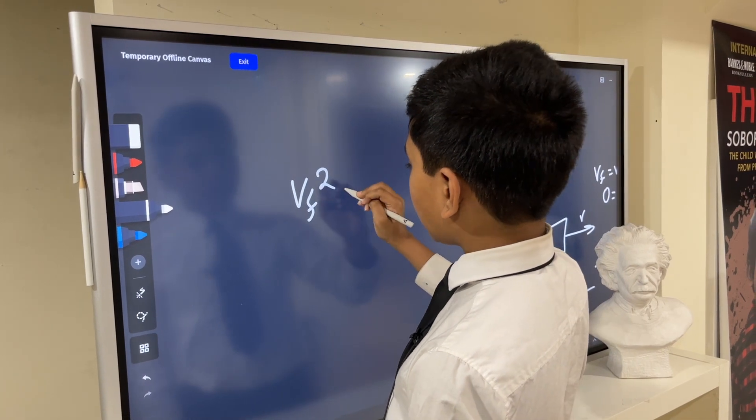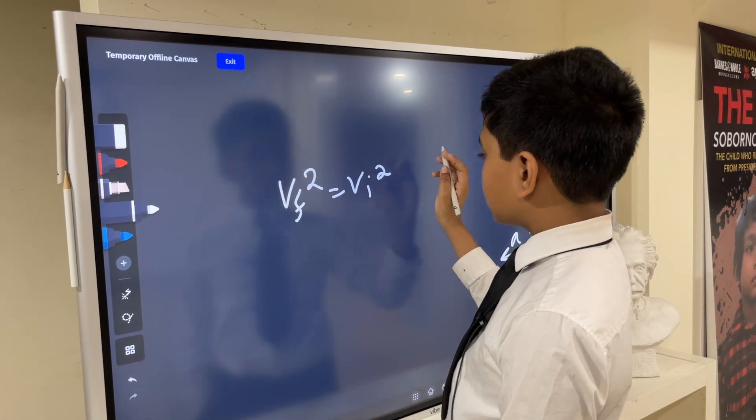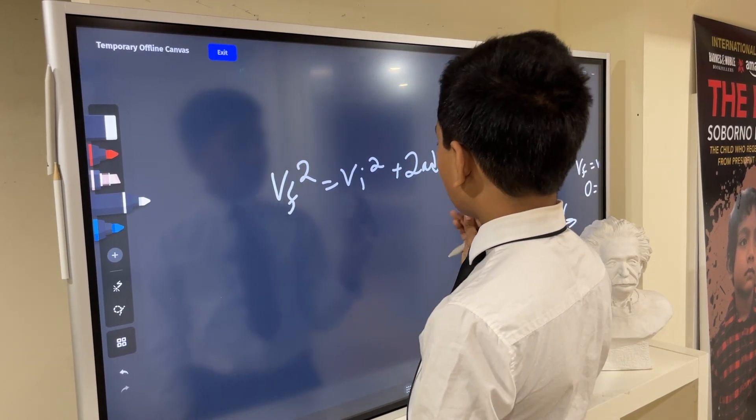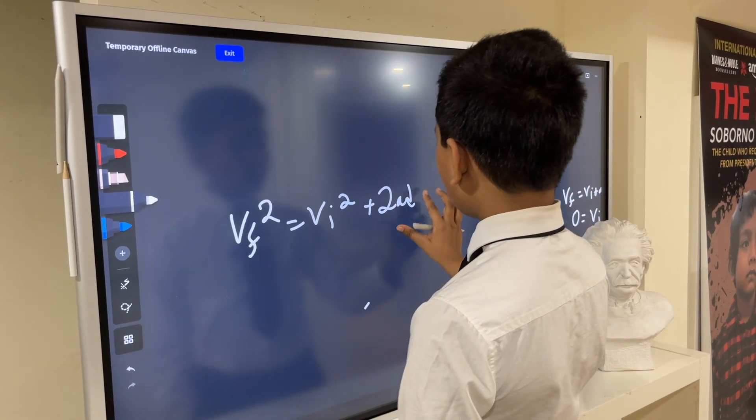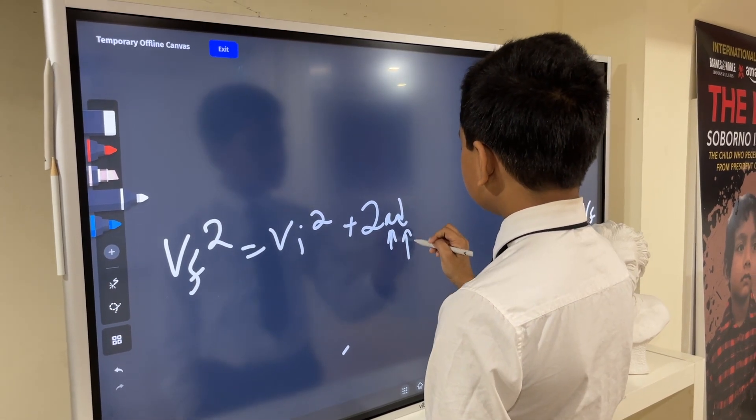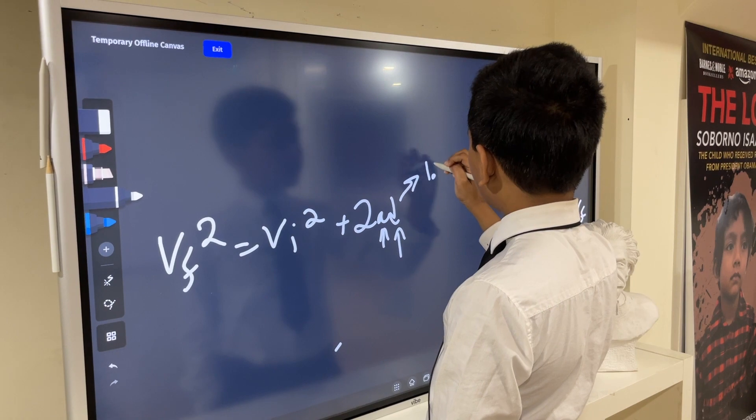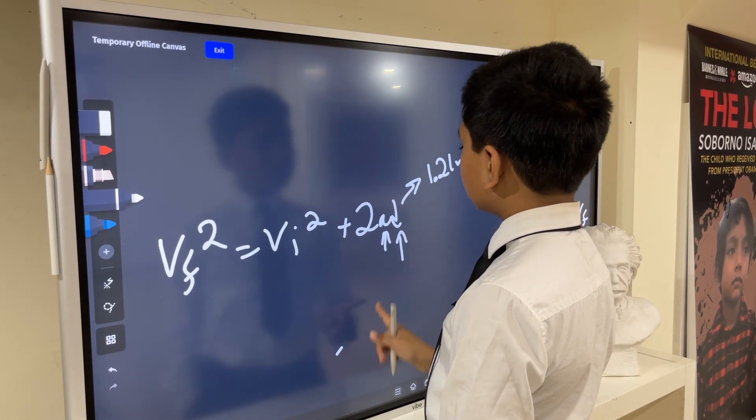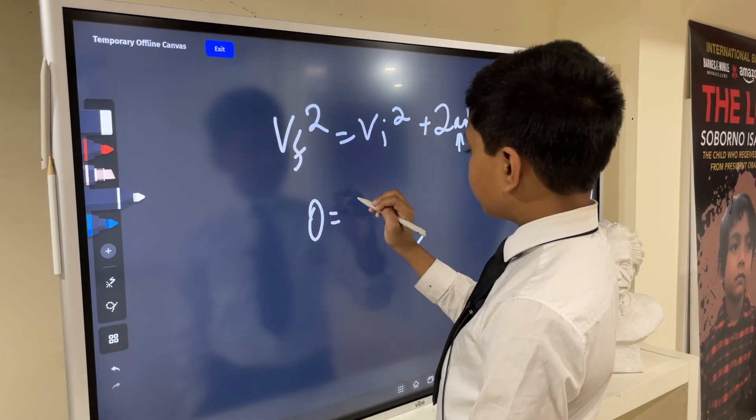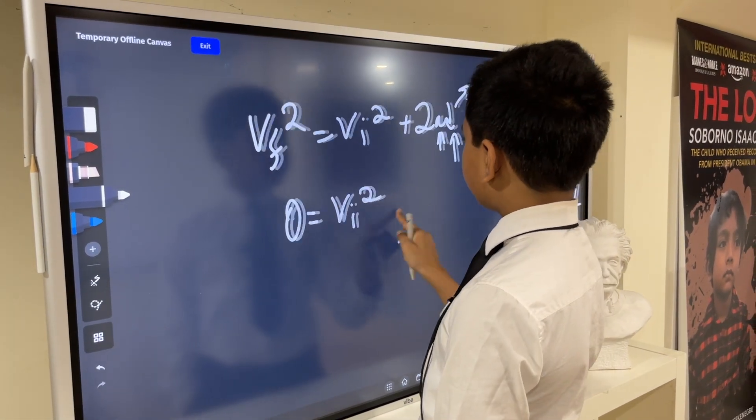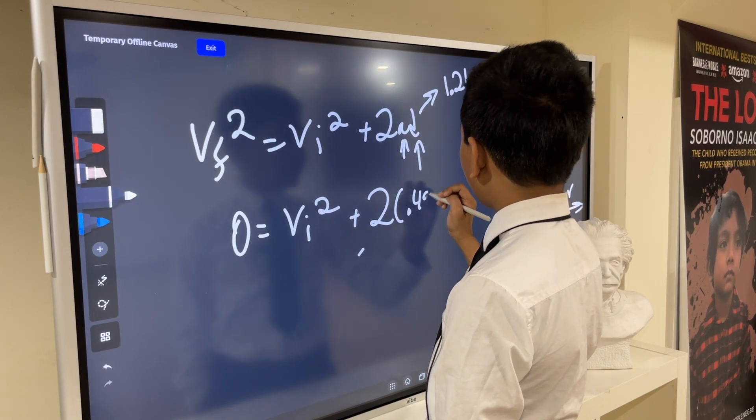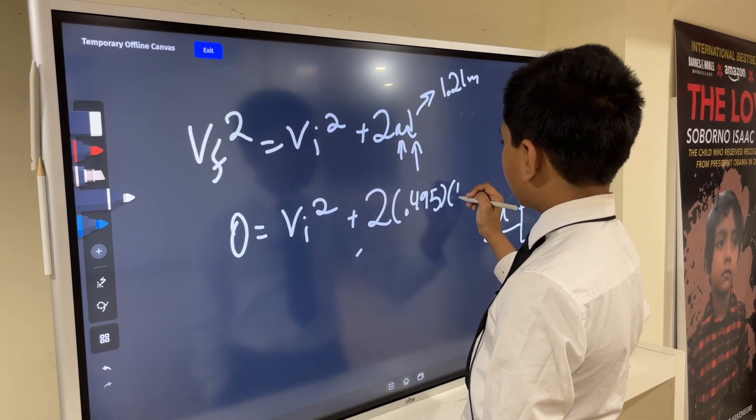Instead, we can use the equation without time: VF squared equals VI squared plus 2AD. We already know the acceleration, so that's good. We know the distance that it travels. That's going to be 1.21 meters. So we're all set here. VF squared is going to be 0. VI squared, we're trying to find VI, plus 2 times 0.495 times 1.21.